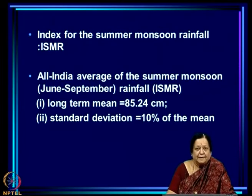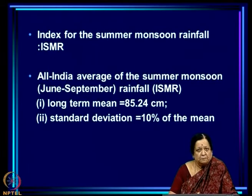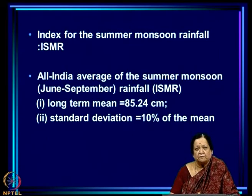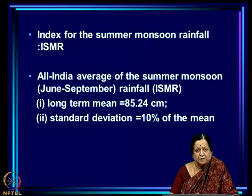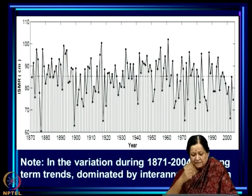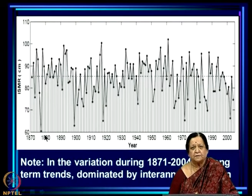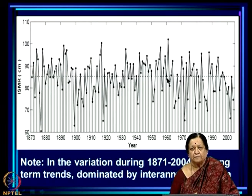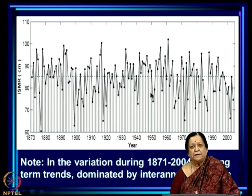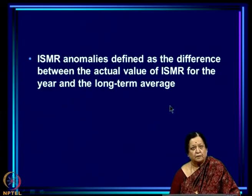The index for summer monsoon rainfall is the all-India summer monsoon rainfall — ISMR. The long-term mean is 85.24 cm and the standard deviation is 10 percent of the mean. The ISMR anomaly is defined as the difference between the actual ISMR for the year and the long-term average. ISMR anomaly is representative of most parts of the country only when there are droughts or excess rainfall seasons. By and large, the mean rainfall has remained the same with no long-period trends — there are epochs above and below normal, but no sustained trend.